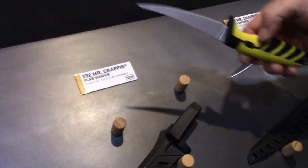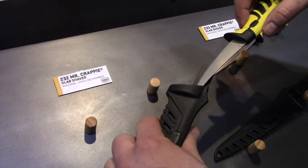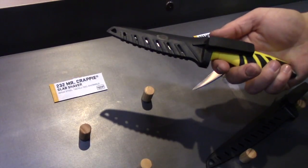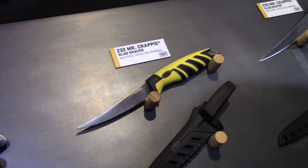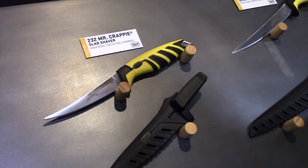A little bit smaller here for smaller fish. Same blade steel on that one? Same blade steel on that one as well.